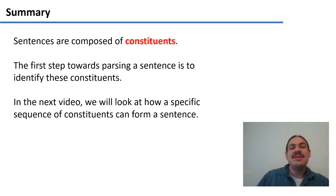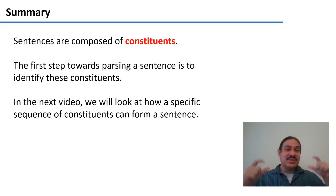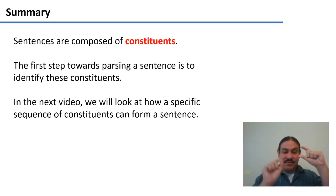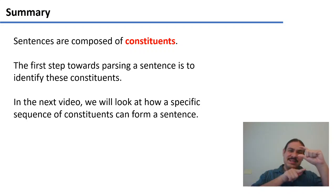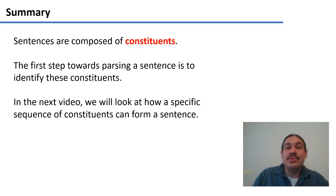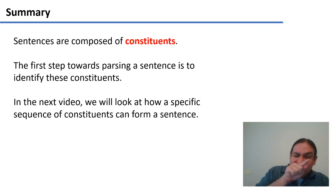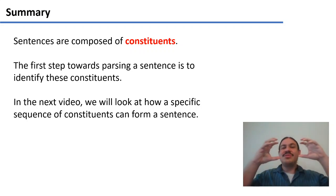In summary, we have a structure called a sentence, which is made up of constituents like noun phrases and verb phrases. Our first step is identifying what these constituents are. In the next video, we will look at how we can analyze the internal structure of a constituent and then start building larger and larger elements until we can build the whole sentence.